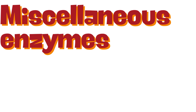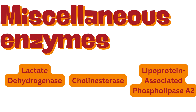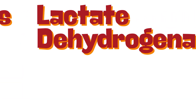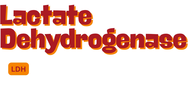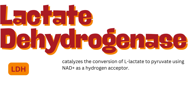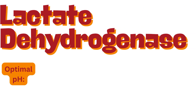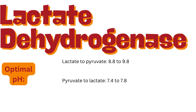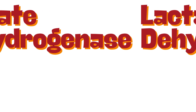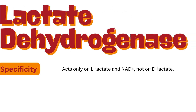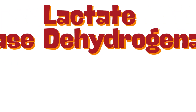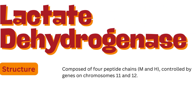Miscellaneous enzymes include lactate dehydrogenase, cholinesterase, and lipoprotein-associated phospholipase A2. Lactate dehydrogenase, or LDH, is an enzyme that catalyzes the conversion of L-lactate to pyruvate using NAD as a hydrogen acceptor. This reaction can proceed in both directions, but typically favors the conversion of pyruvate to lactate. Optimal pH: lactate to pyruvate, 8.8 to 9.8; pyruvate to lactate, 7.4 to 7.8. Specificity: acts only on L-lactate and NAD, not on D-lactate. Structure: composed of 4 peptide chains, M and H, controlled by genes on chromosomes 11 and 12.